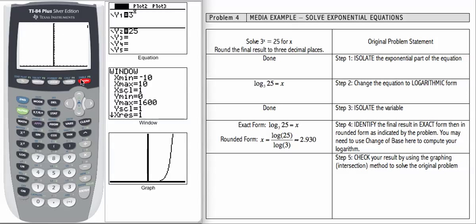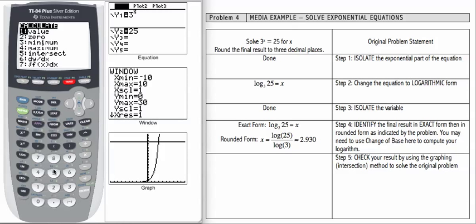There's our exponential. There's the y equals 25. Let's do 2nd calc number 5, which is the intersect method. We're going to be hitting enter 3 times to verify the result. 2.930, if I round that appropriately to 3 decimals. So by checking using the graphing method, we've verified the solution.